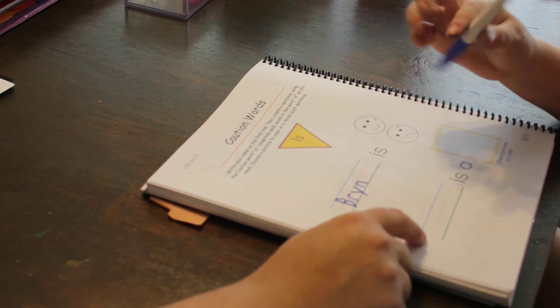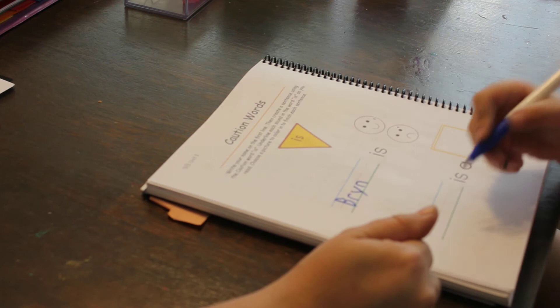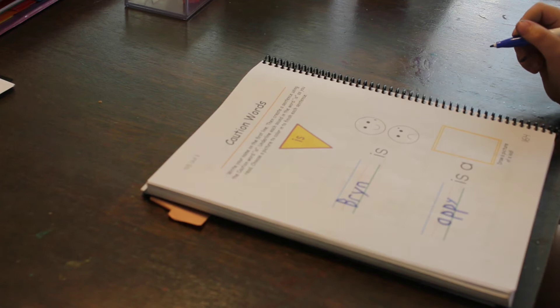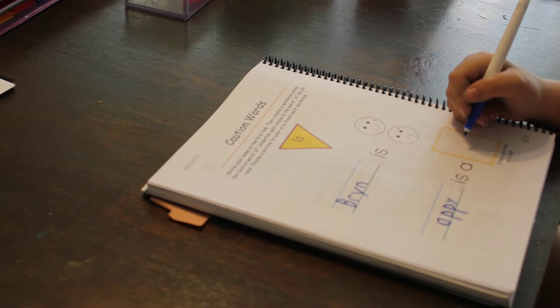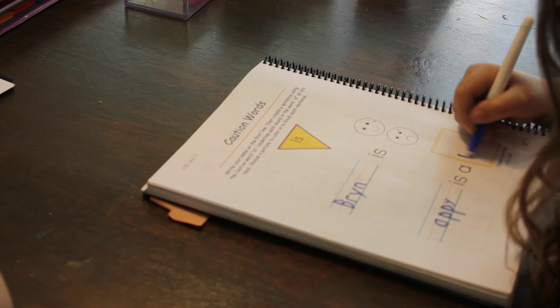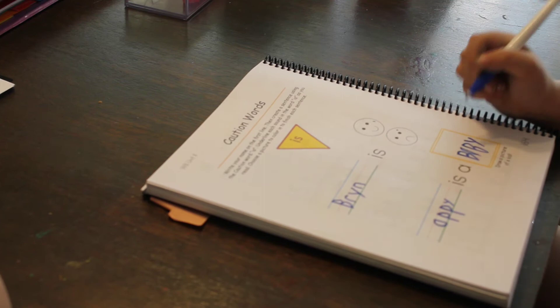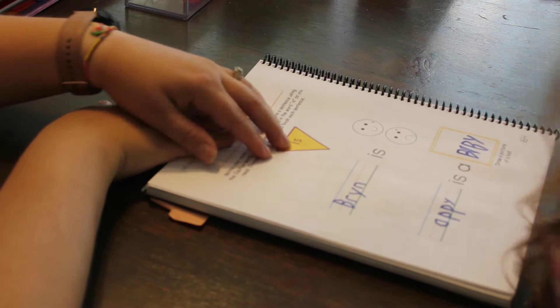You're medium, okay. So down here who do you want to write about, you or me or the dog? Good. Appy is a baby. Can you draw a baby or you can write the word baby, whichever one you want. Well let's sound it out, but I know how it's spelled: baby, B-A-B-Y. Good job. Appy is a baby. This is our caution word, so anytime we see this word we just have to remember that this word says 'is'.